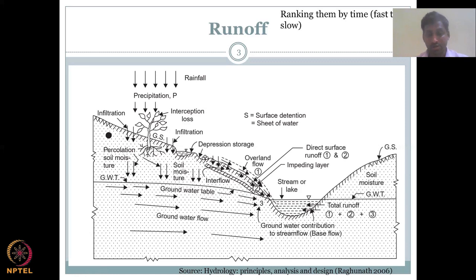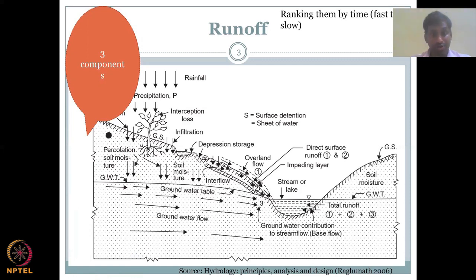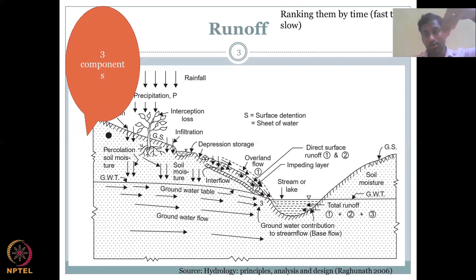So you have overland runoff and subsurface runoff. Another name given for subsurface runoff is Hortonian flow. The other component is the groundwater-based component. Part of the water goes in as infiltration, and some of the infiltrated water comes out as subsurface runoff. If you visualize it like layers of a cake, on the top, water would go down, and in the first layer, it goes in — that is your subsurface.